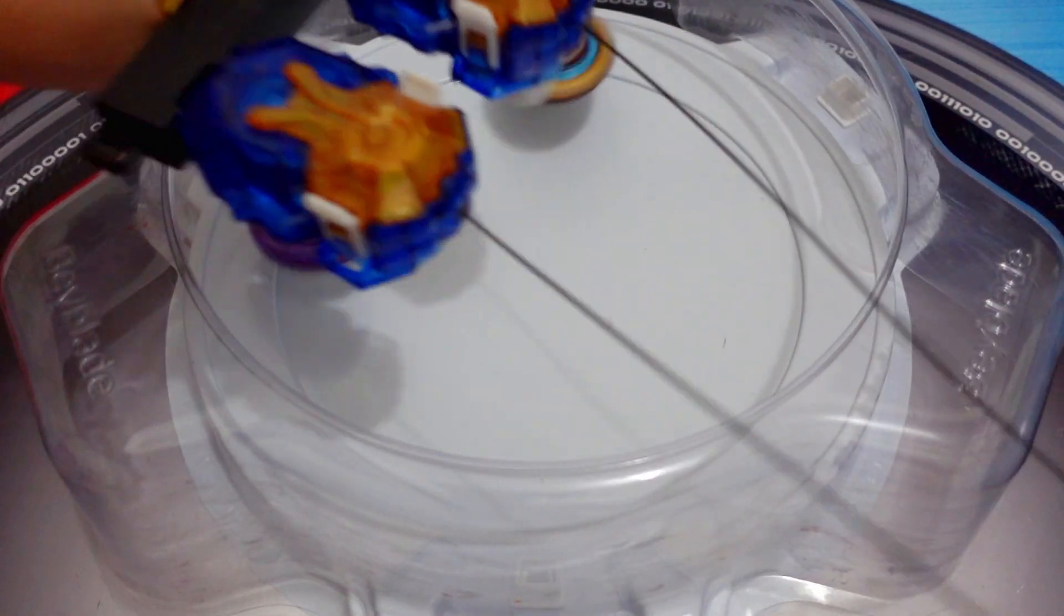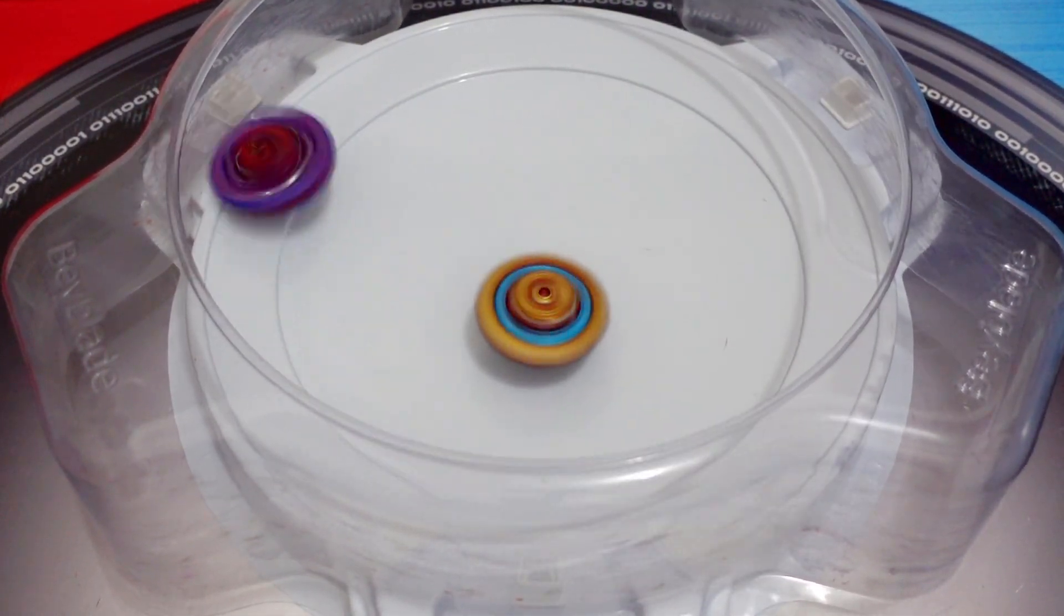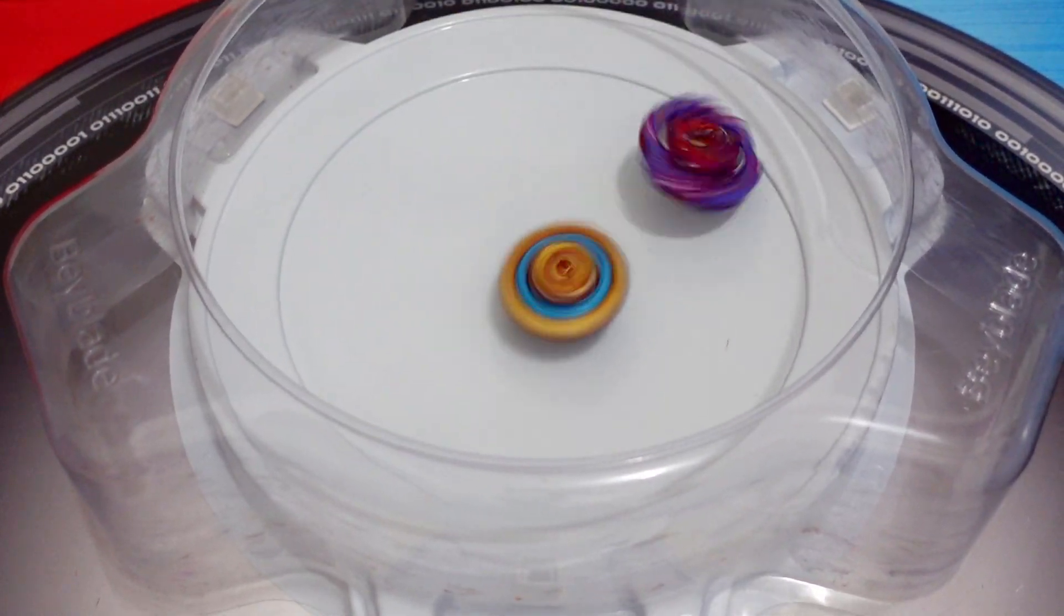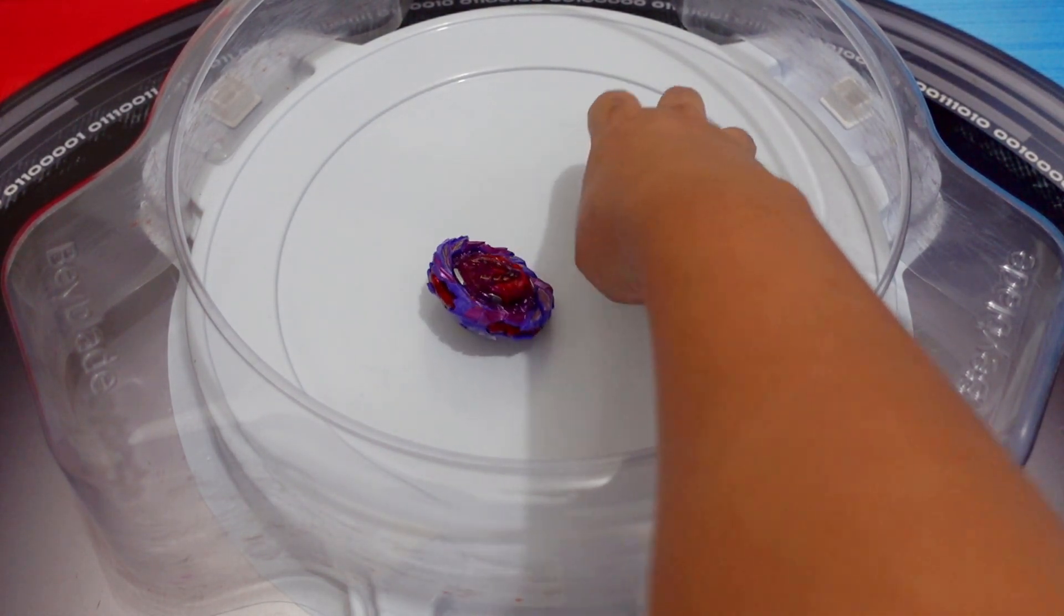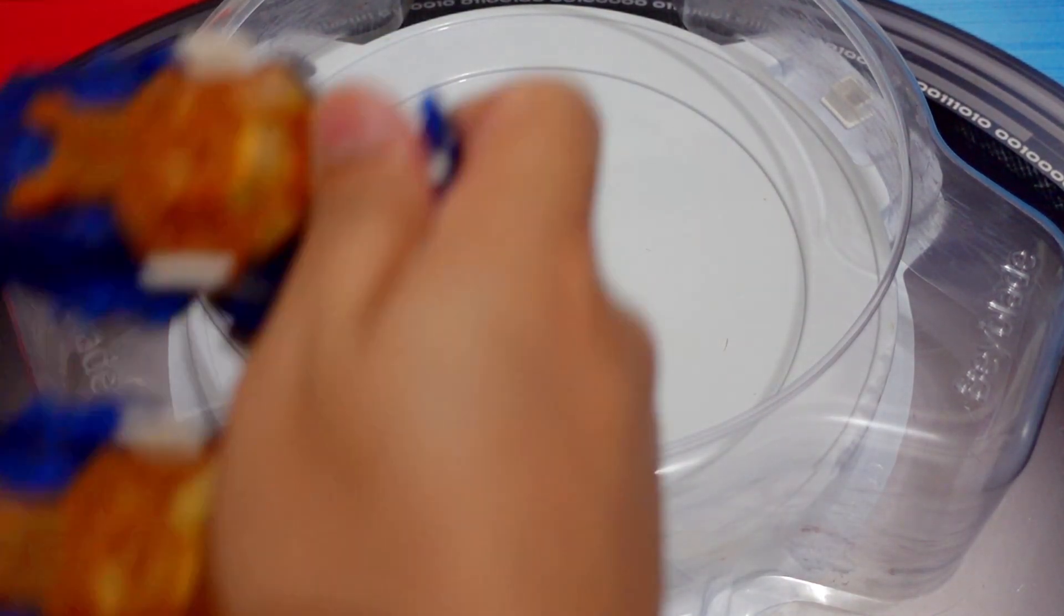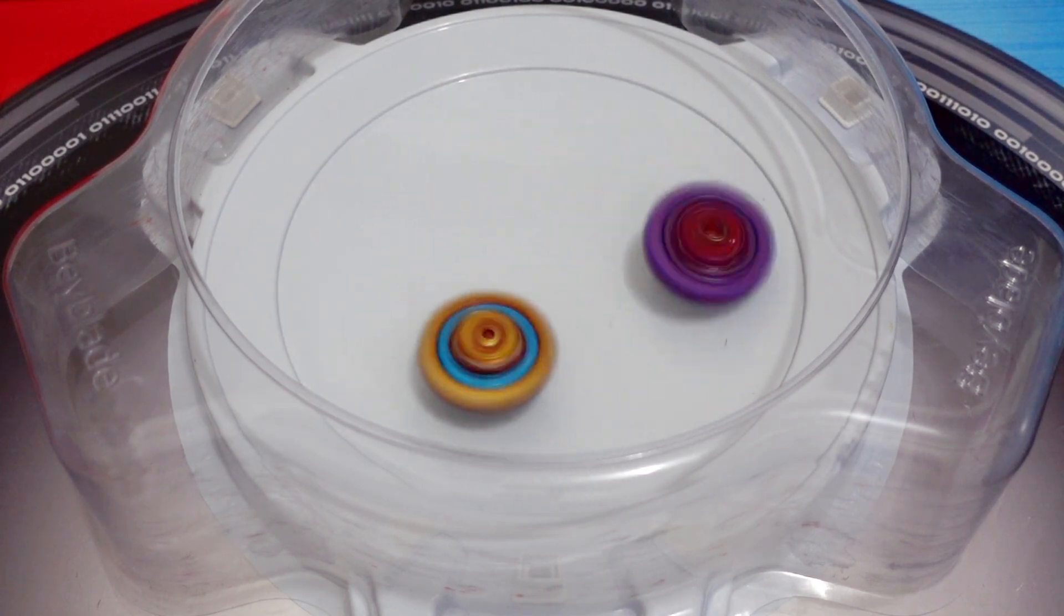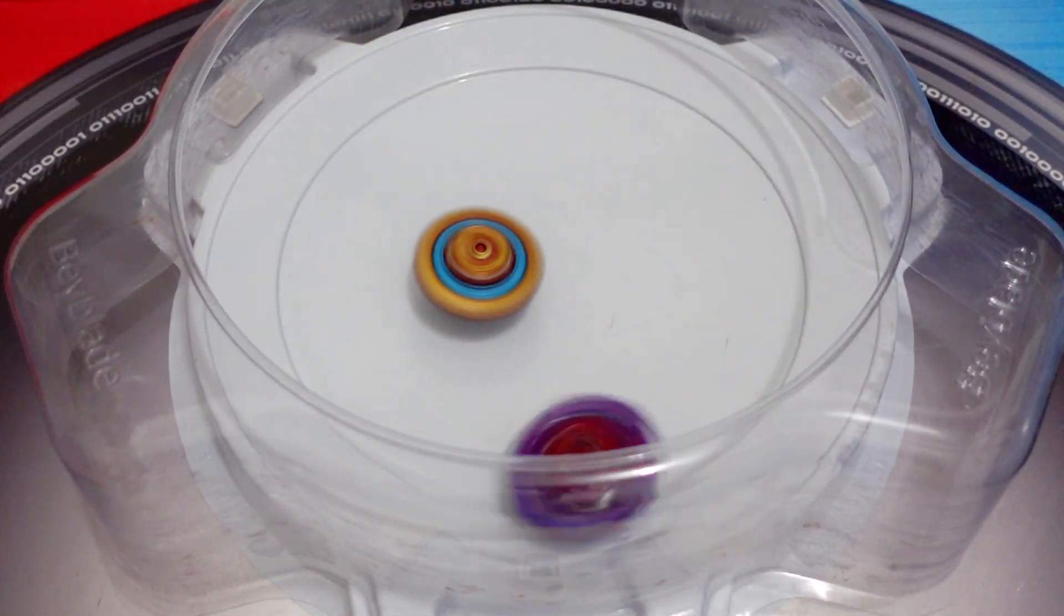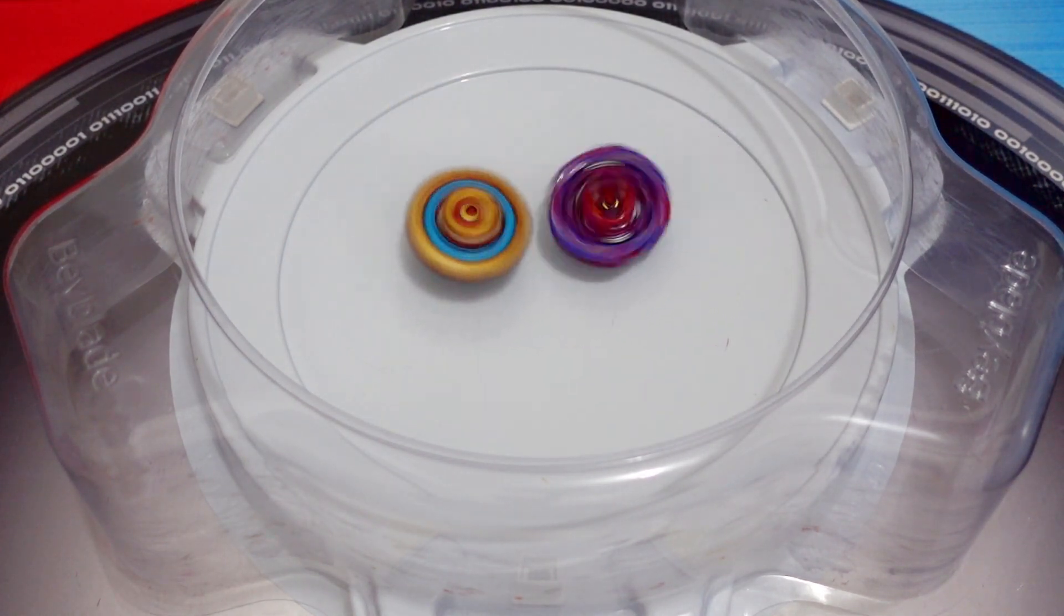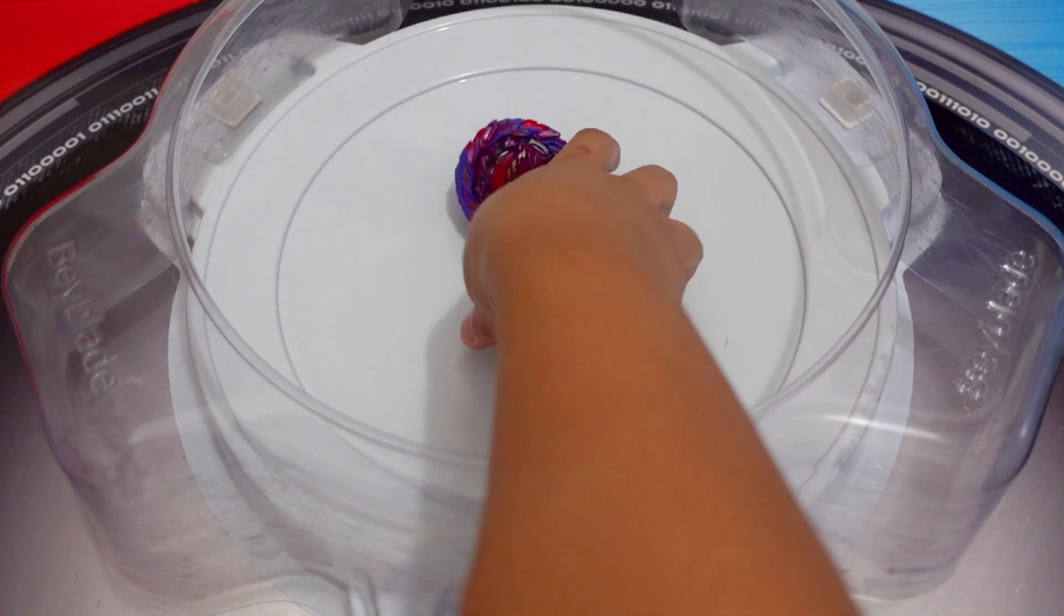Ready? 3-2-1, go. Is that your ultimate technique, Roar Bamut? Ready? 3-2-1, go. Don't do that Astral Spriggan. I mean Roar Bamut. Winner is Astral Spriggan.